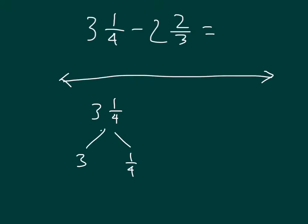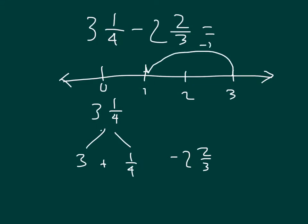3 and 1 fourth we can break down into 3 put together with 1 fourth, and then we're subtracting 2 and 2 thirds from it. So we're going 3 plus 1 fourth minus 2 and 2 thirds. We can think about it as subtracting from 3 first: subtract 2 first, then subtract 2 thirds from that. Going 1 third and 2 thirds and subtracting 2 thirds, from 1 we would end up with 1 third. So 3 minus 2 and 2 thirds is 1 third.